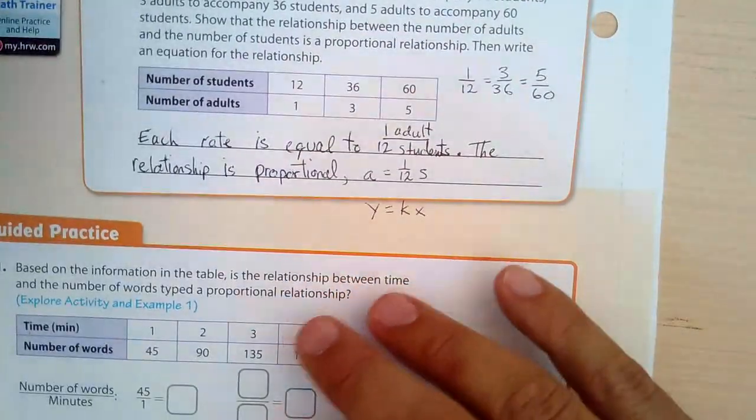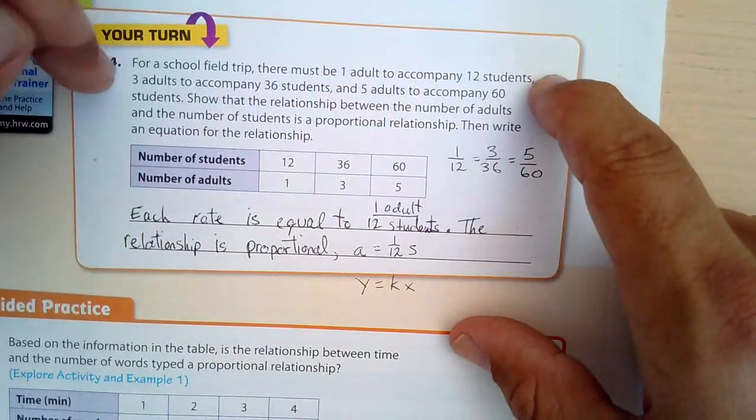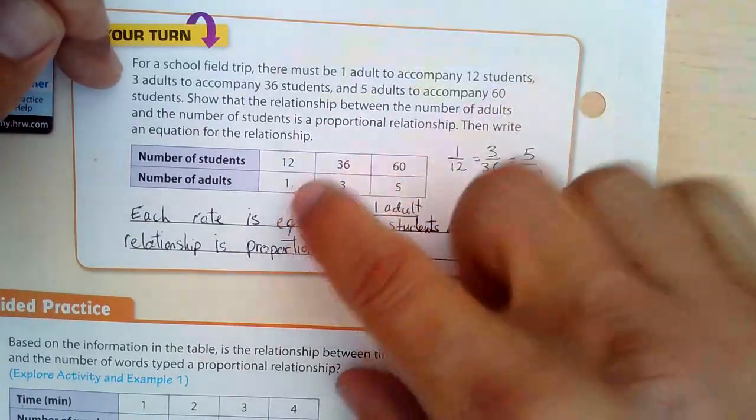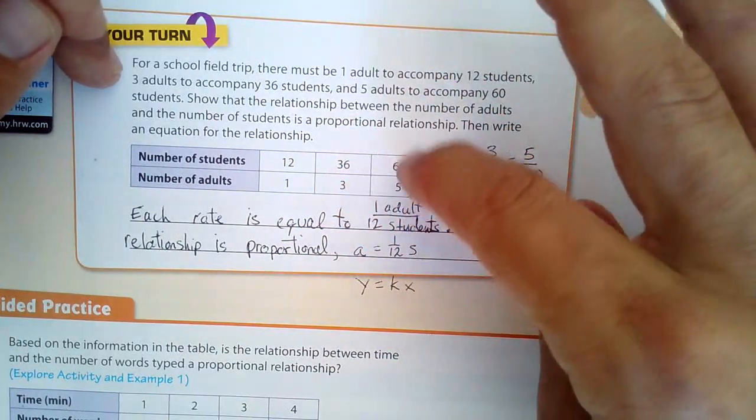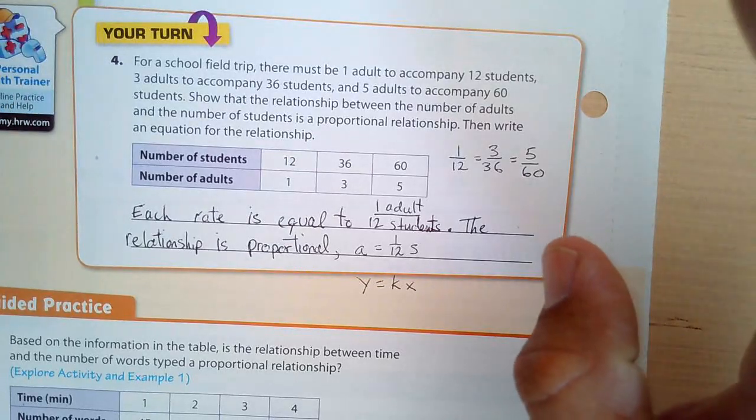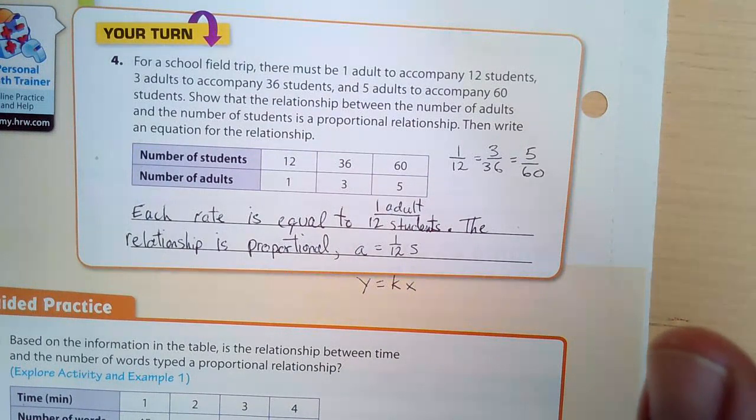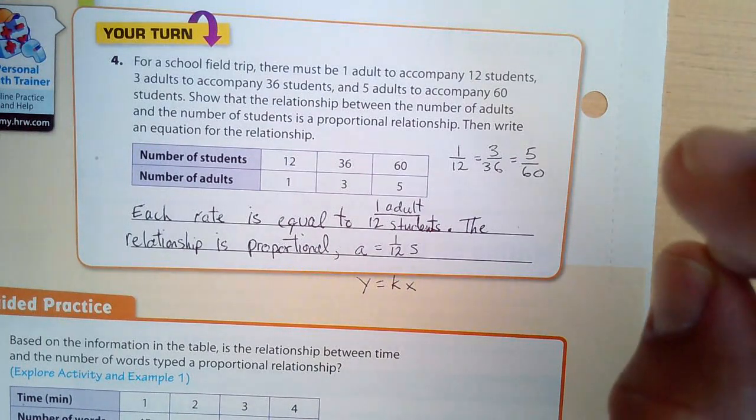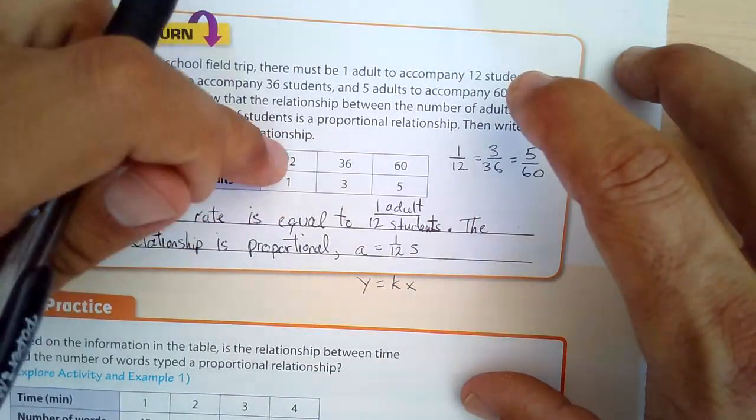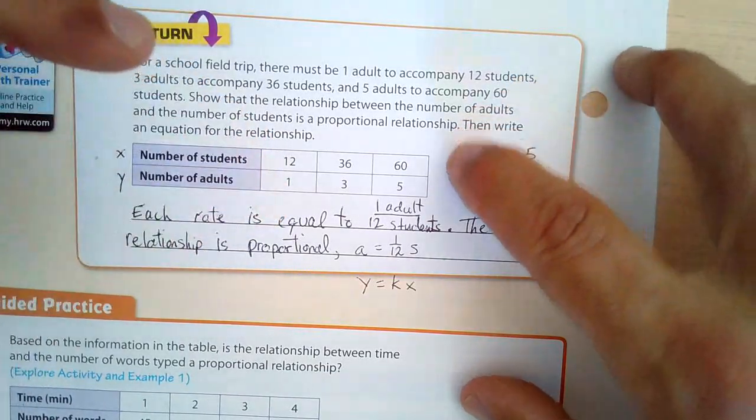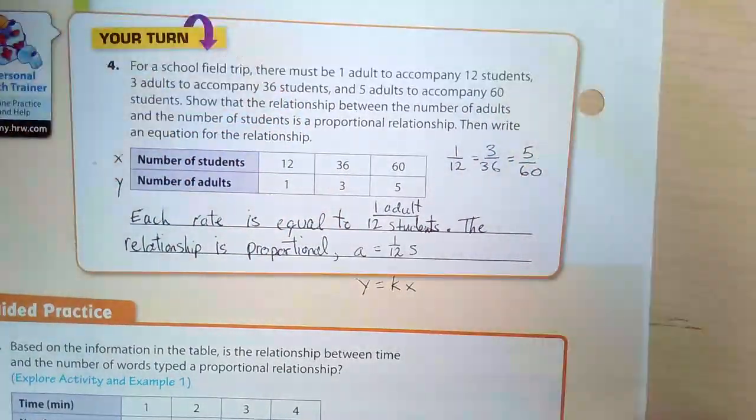So our last question here. For school field trip, there must be one adult to accompany 12 students. Three adults accompany 36 students. Okay. So one adult, 12 students, 3, 36. And five accompany 60. Show that the relationship between the number of adults and the number of students is a proportional relationship. And then write an equation for the relationship. Okay. So let's take, you know, we have Y, X and Y. So 1 over 12, Y over X, 1 over 12. Okay. Got it. 3 over 36, 3 over 36, and 5 over 60. Are these the same?